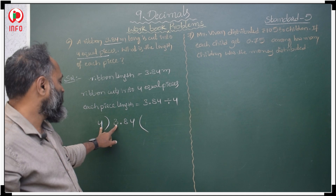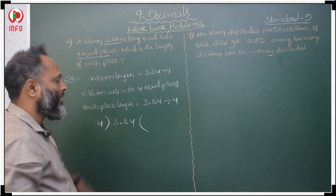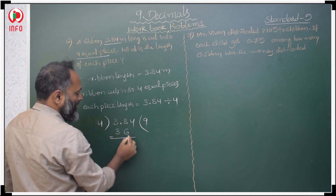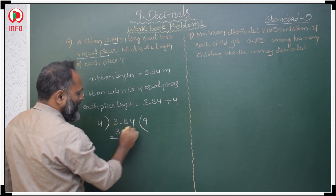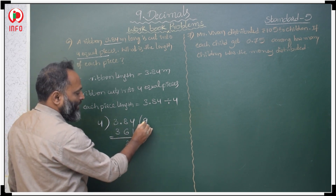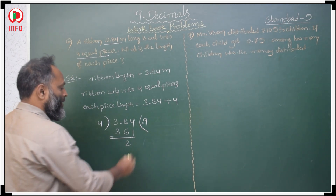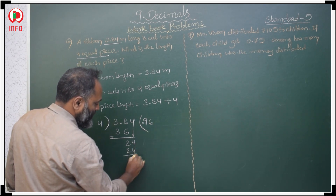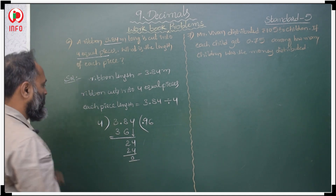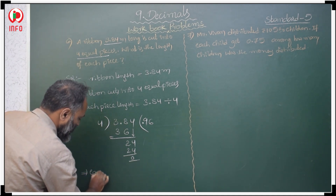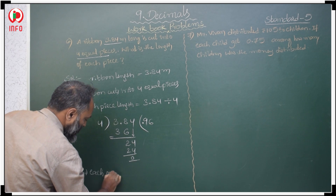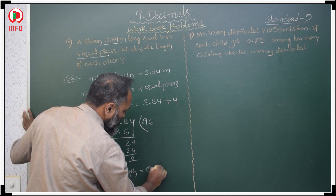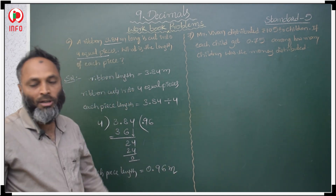Since 3 is less than the divisor 4, we take 38 at a time. 4 nines are 36; 38 minus 36 is 2. Then bring down the decimal point and copy 4. 4 sixes are 24. So the answer is 0.96. Each piece length is equal to 0.96 meters.